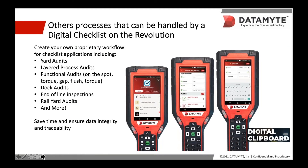It's worth mentioning that there are many other processes that can be handled by Digital Clipboard. It is not just an extension of your residual torque audit tools — it can be used along with the Revolution Data Collector, tablet, or phone to automate and digitize any existing audit process currently being done manually or by paper checklists at your organization. This could include yard audits, layered process audits, functional audits, dock audits, end-of-line inspections, rail yard audits, and much more. Using Digital Clipboard to set up digital checklists with your unique requirements provides greater data integrity and traceability, real-time insights and feedback, and saves time and effort for the operators.